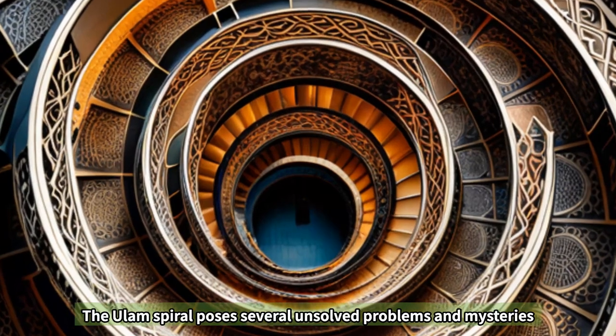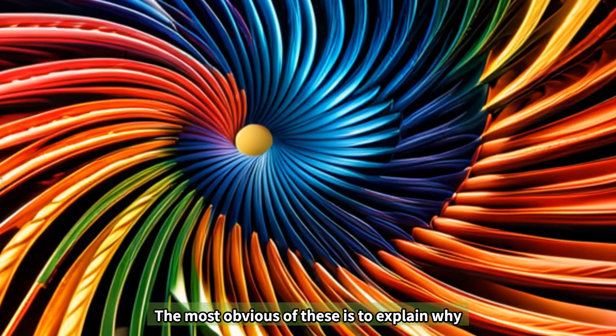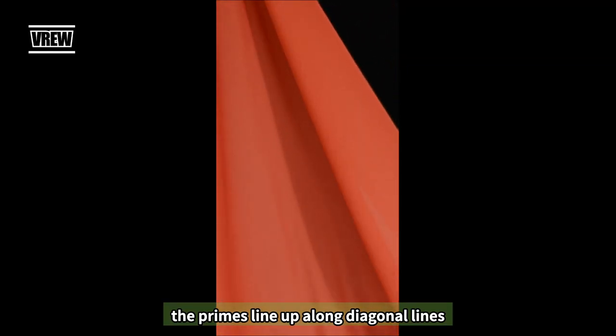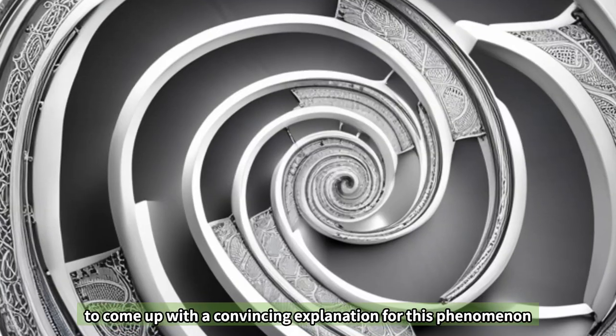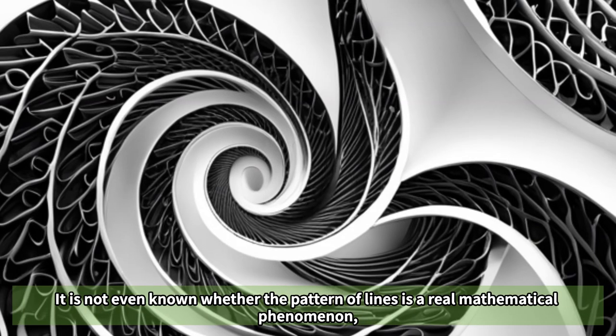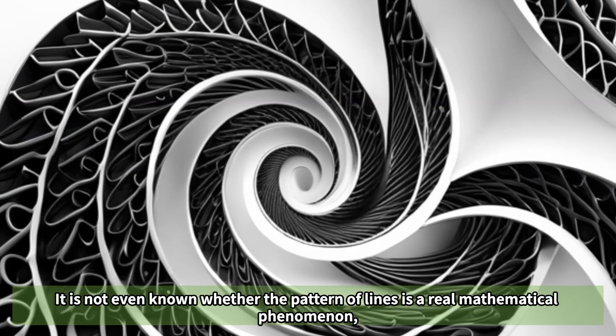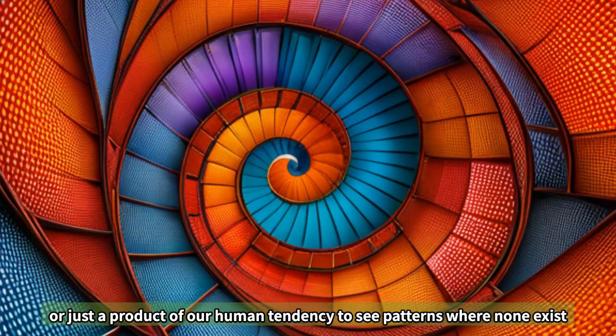The Ulam spiral poses several unsolved problems and mysteries. The most obvious of these is to explain why the primes line up along diagonal lines. Despite much effort, no one has been able to come up with a convincing explanation for this phenomenon. It is not even known whether the pattern of lines is a real mathematical phenomenon or just a product of our human tendency to see patterns where none exist.